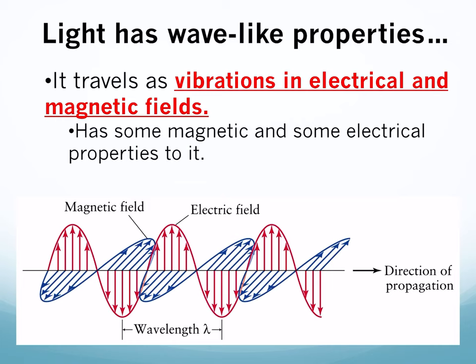First we're going to talk a little bit about waves in general. Light can behave as both a wave and a particle, which is why quantum mechanics gets a little tricky. We're going to talk about how it behaves like a wave first. It travels as vibrations in electrical and magnetic fields, and there's a picture here indicating the direction of propagation — the direction the wave is going.